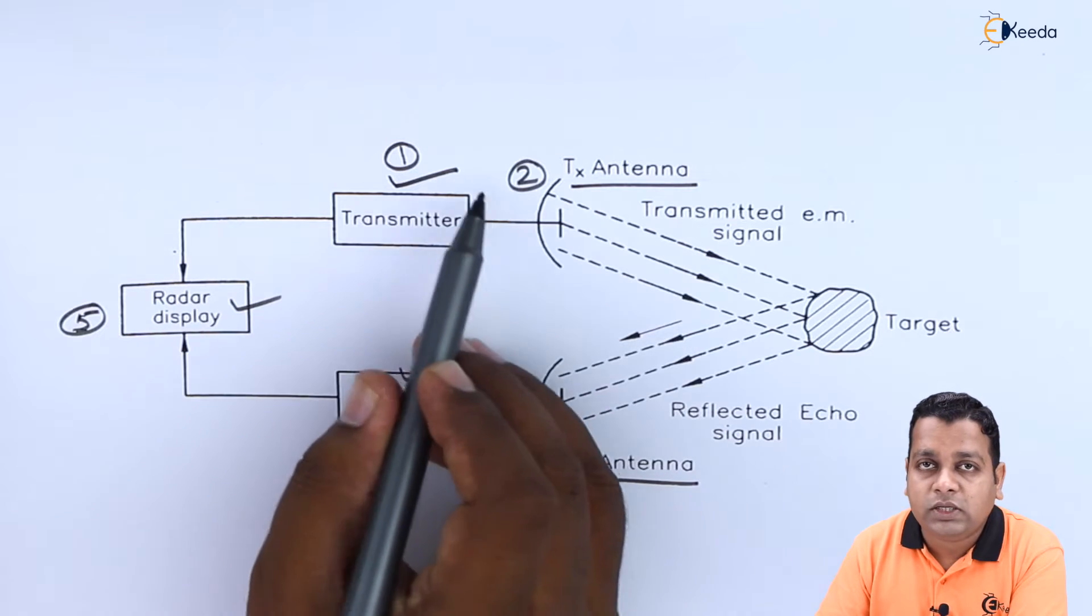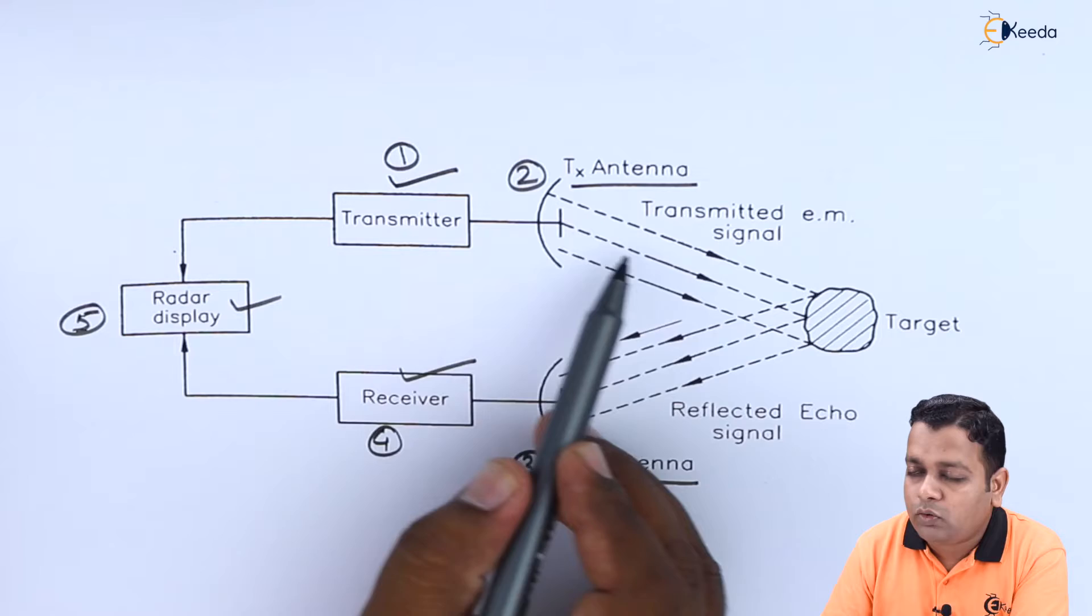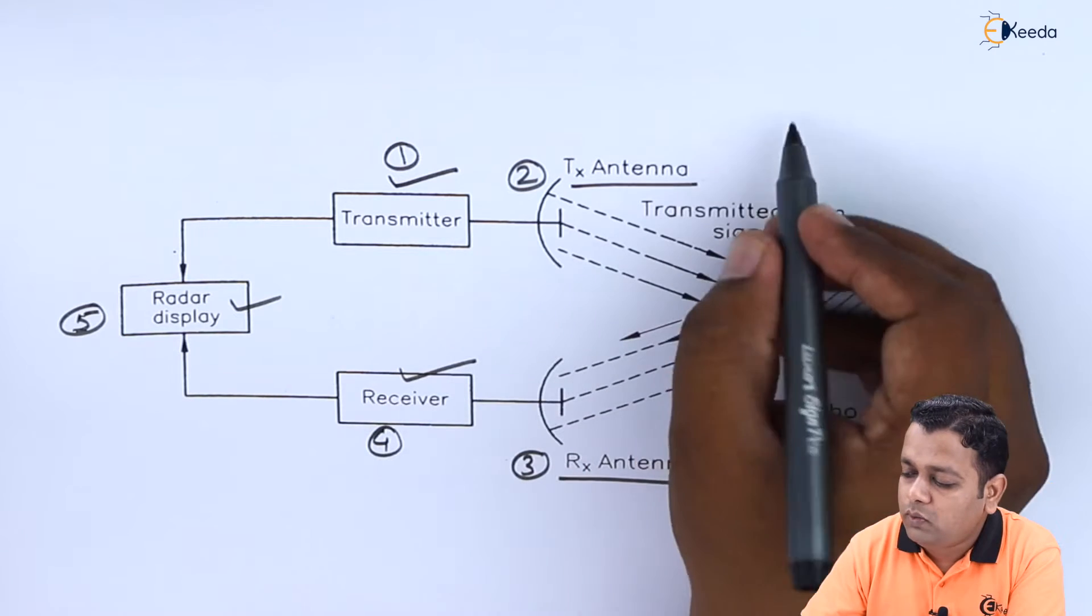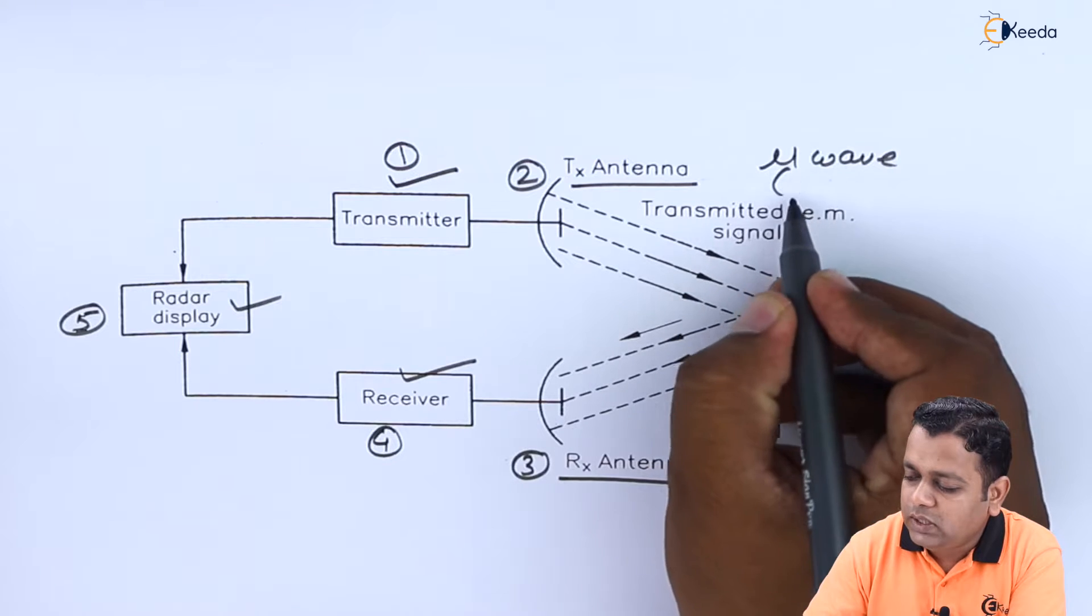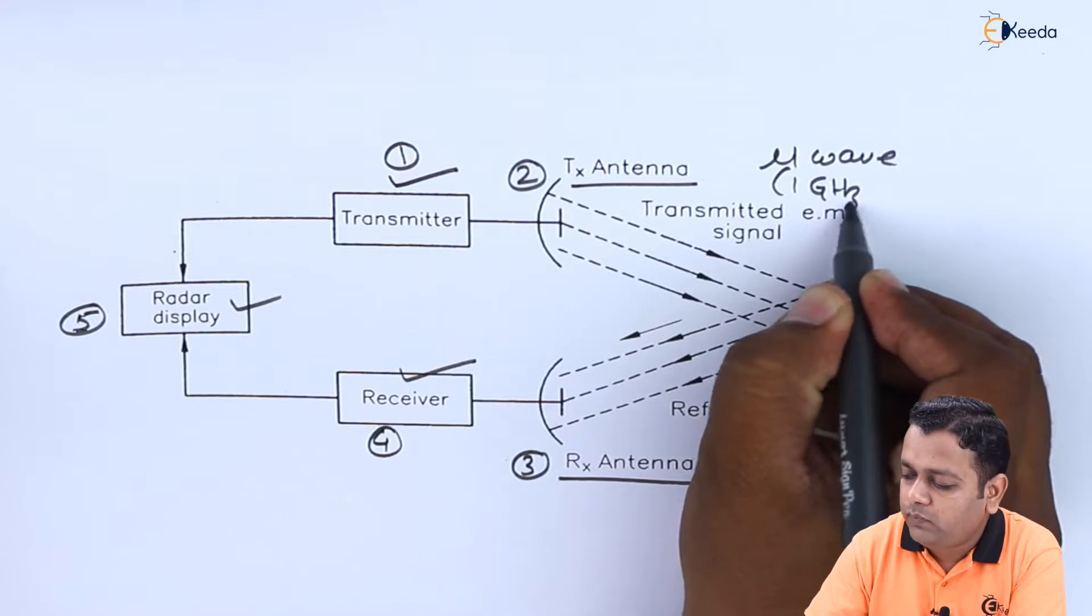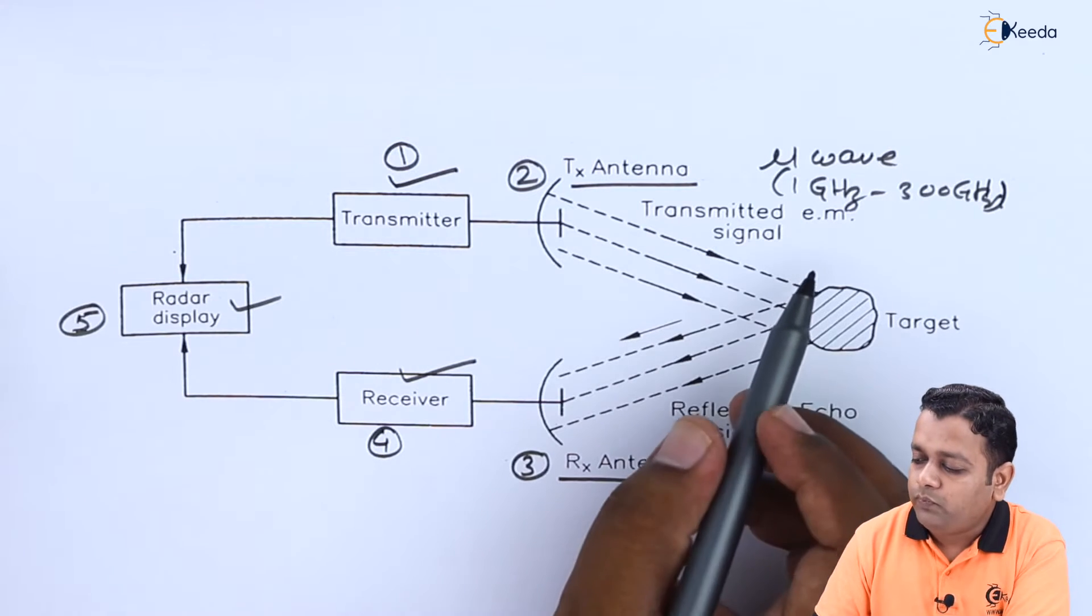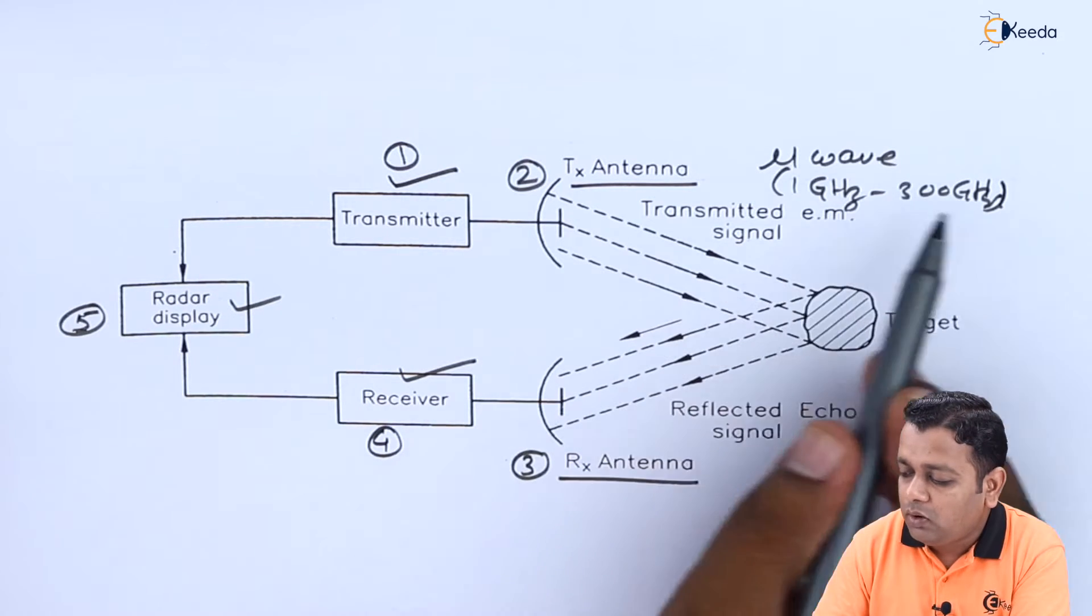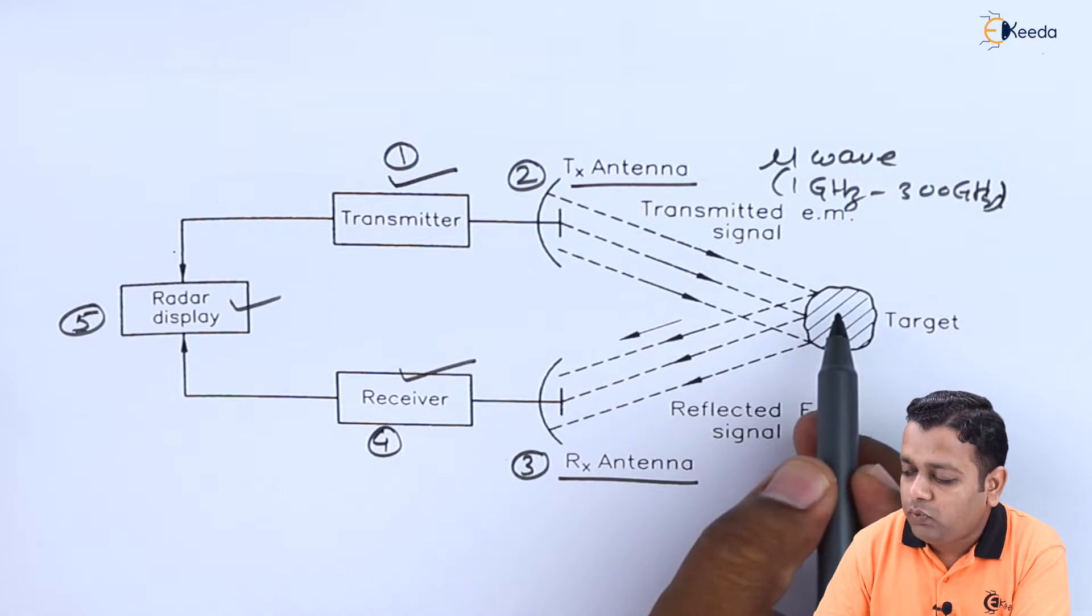The transmitter is basically radiating the electromagnetic wave or the microwave, in general we can say, in the frequency range 1 gigahertz to 300 gigahertz.